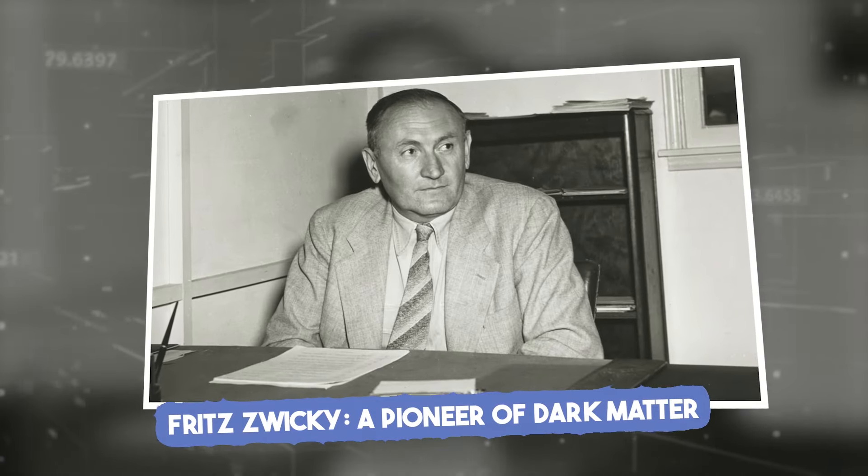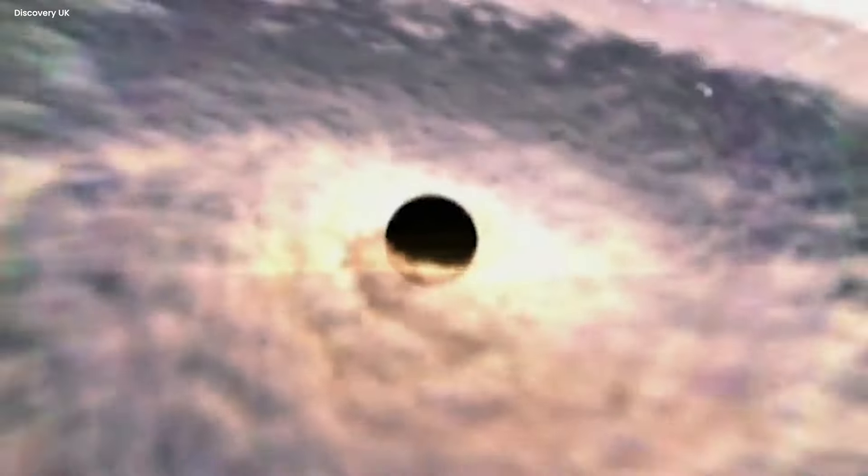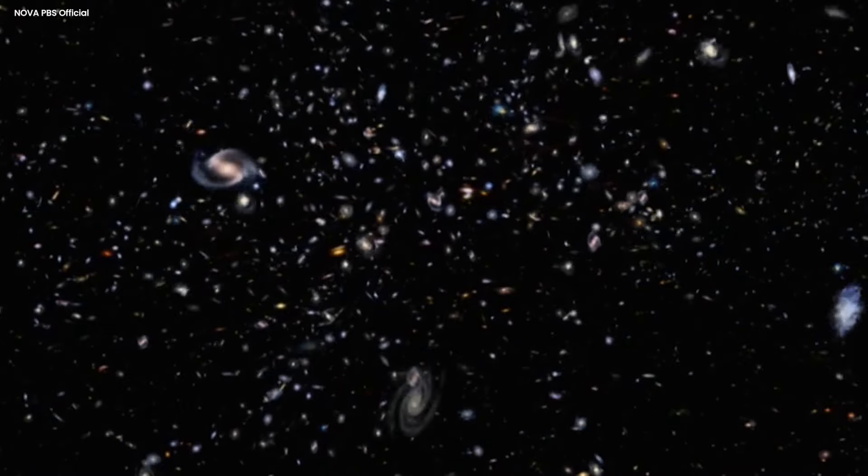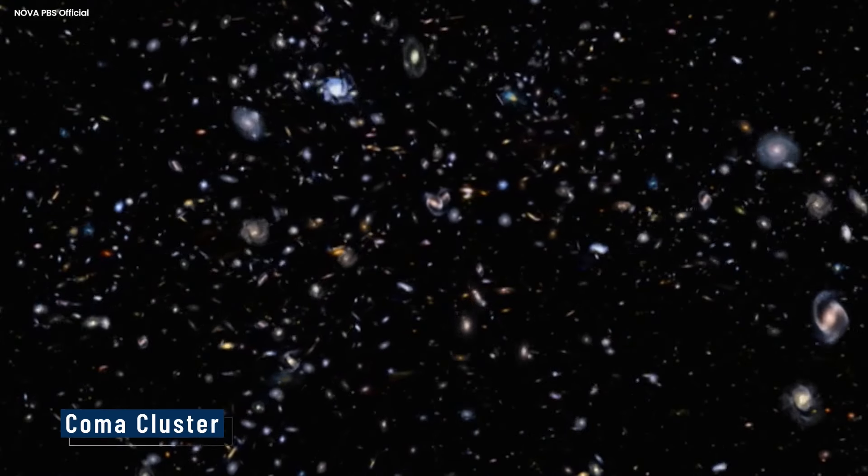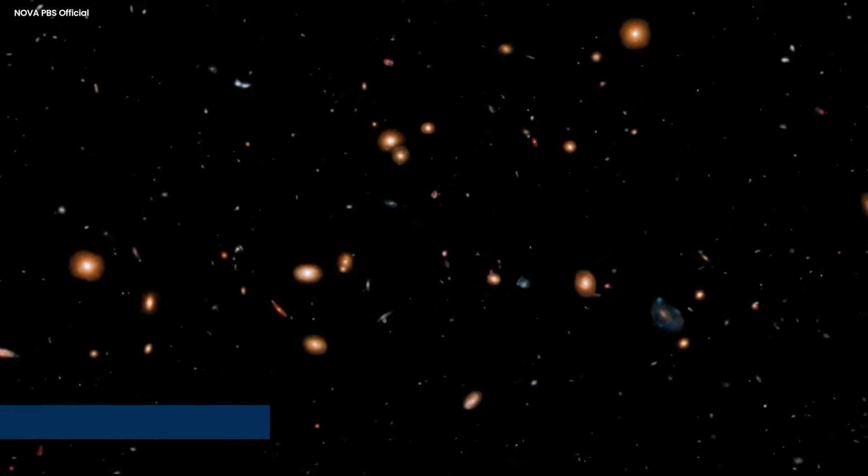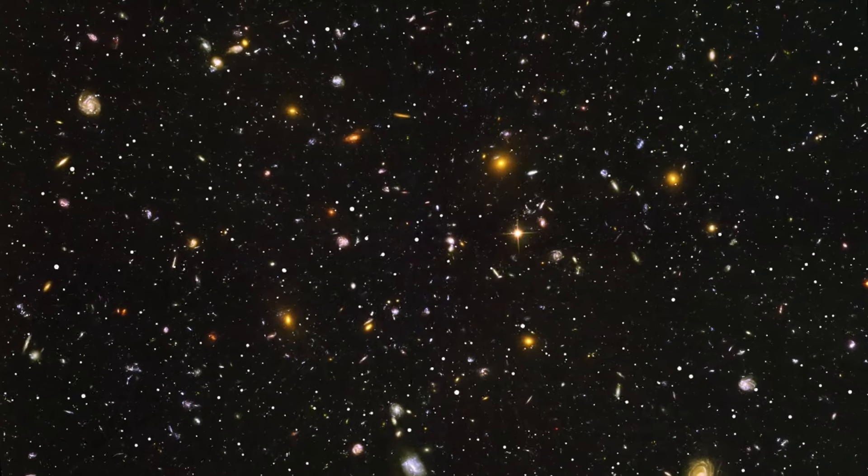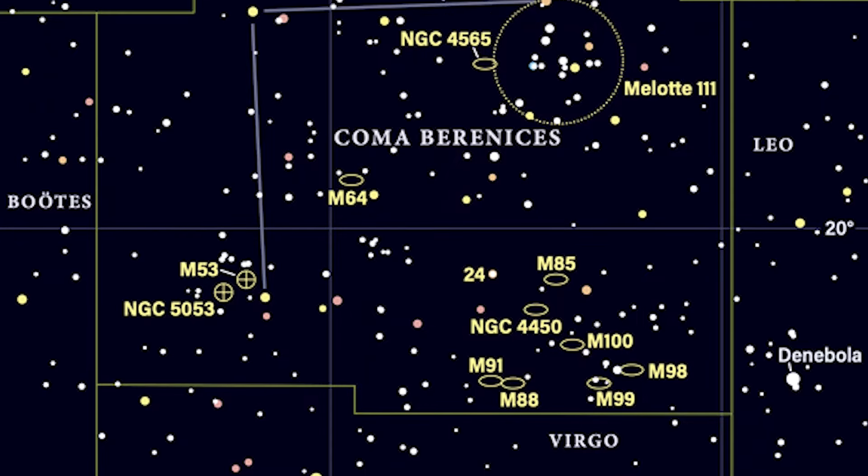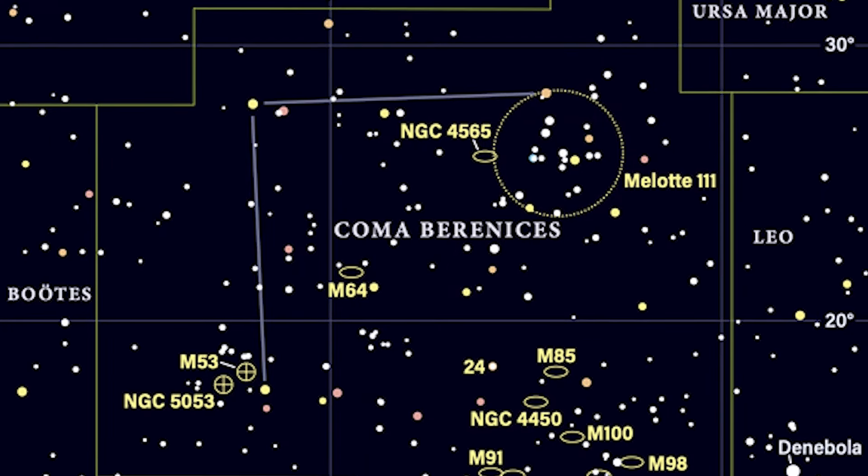Fritz Zwicky, a pioneer of dark matter. Things got even more interesting the following year. Fritz Zwicky was a Swiss astronomer working at the California Institute of Technology. He was looking at a giant gathering of galaxies called the Coma Cluster, way out there, about 300 million light years away. It was almost like a cosmic city with over a thousand galaxies all hanging out together, bound by gravity in the constellation Coma Berenices.